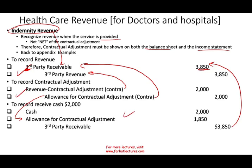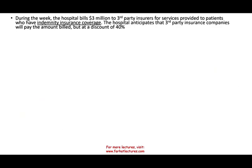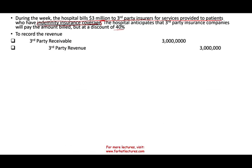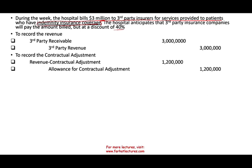Let's work through another example. During the week, a hospital bills $3 million to third-party insurers for services provided under indemnity coverage — recorded at gross. The hospital anticipates the insurance company will pay, but at a 40% discount. Journal entry: debit third-party receivable $3 million, credit third-party revenue $3 million. Then record the contractual adjustment: 40% × $3 million = $1.2 million. Debit revenue contractual adjustment $1.2 million, credit allowance for contractual adjustment $1.2 million.